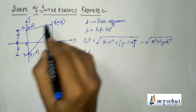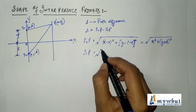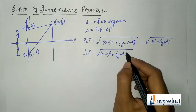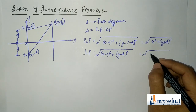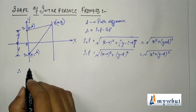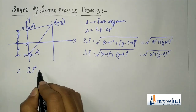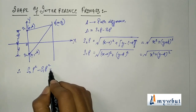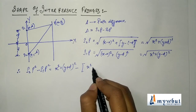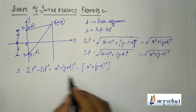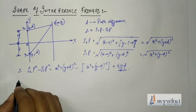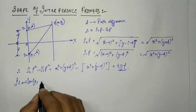Similarly, S1P can be written using the right-angle triangle as the square root of x² + (y − d)². Therefore, if we square and subtract — that is, compute S2P² minus S1P² — we get x² + (y + d)² minus x² + (y − d)², which simplifies to 4yd.